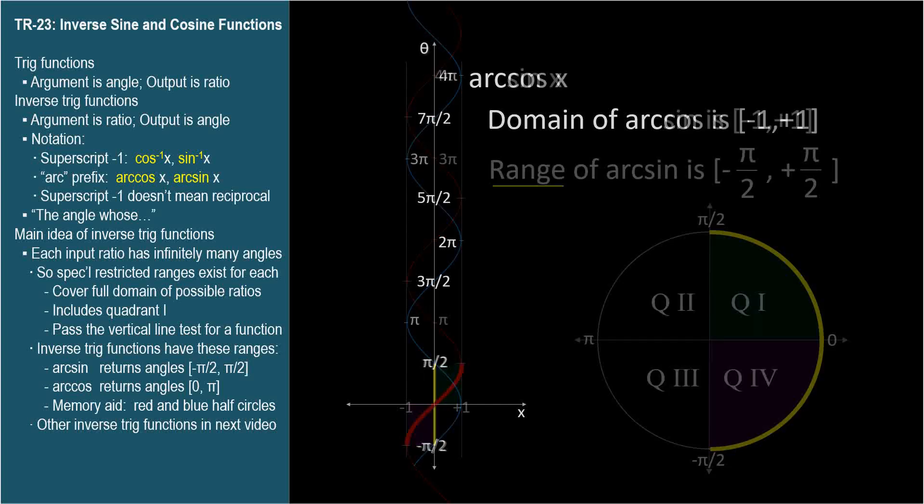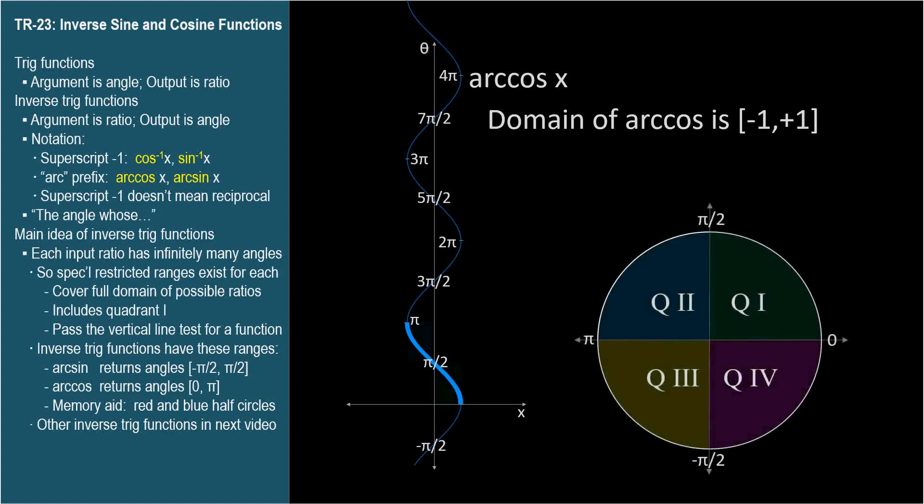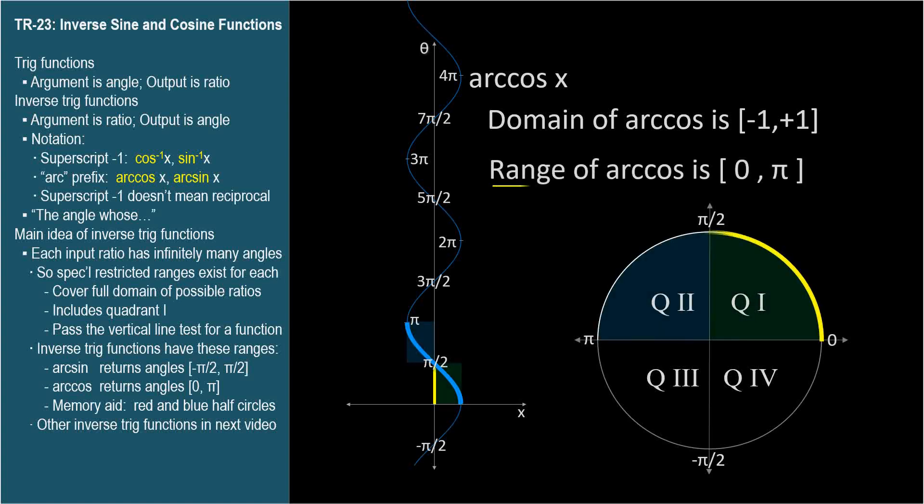Let's look at the arc cosine curve. Its domain is also negative 1 to positive 1, and it has a range of 0 to pi radians. So the arc cosine function will always return angles in quadrants 1 and 2.